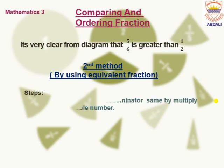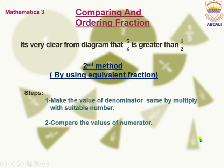Number 1: make the value of denominator same by multiplying with a suitable number. It means for making the denominator same, we have to multiply our given fraction by any number. Our second step is compare the values of numerator. After completing our first step, we have to compare the values of numerator.